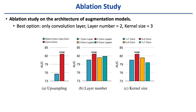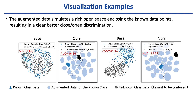We also conducted an ablation study on the architecture of augmentation models. The best option is to use two layers of convolution with kernel size equal to 3. We provide two visualization examples to clarify the effects of augmented data. As seen, the augmented data simulates a rich open space enclosing the known data, resulting in better open set discrimination.